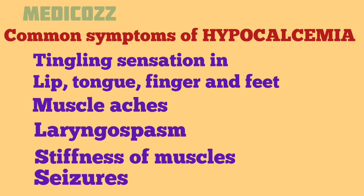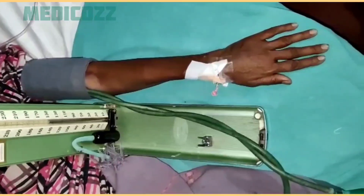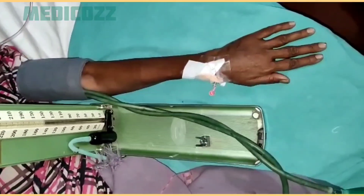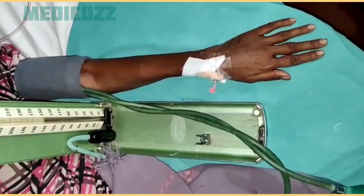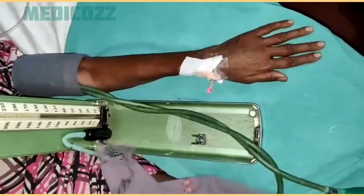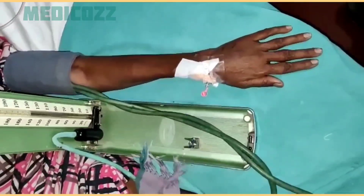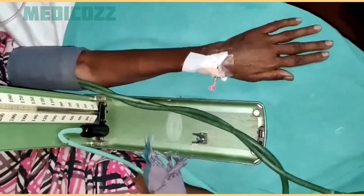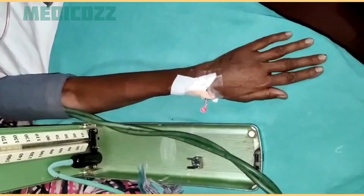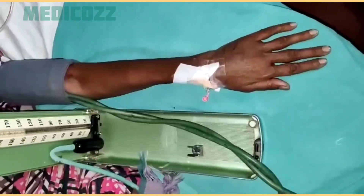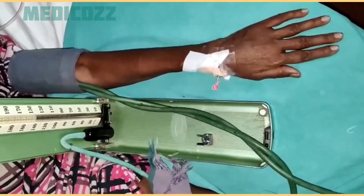Now let's see how to perform Trousseau's sign. First, check the normal blood pressure of the patient. Suppose in this case, the patient's blood pressure was 120/80 mmHg.